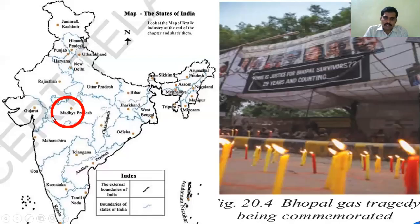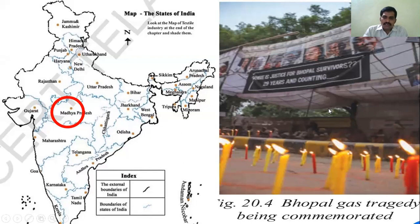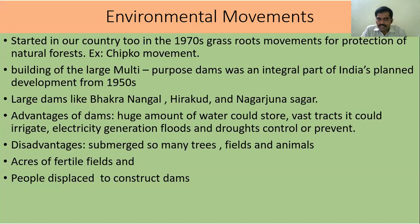Environmental movements. The movements which want to protect the natural environment — some people started environmental movements. In our country too, in the 1970s, grassroot movements for the protection of natural forests started, for example the Chipko movement. When contractors wanted to cut trees, local people surrounded the trees and protected them from cutting. That is the Chipko movement.